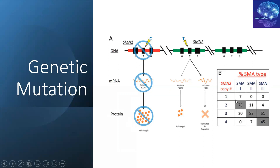If the copy number is one, the patient most commonly will have the SMA1 variant. With two SMN2 copy numbers, most patients will have SMA1, a small number may have SMA2. With three copy numbers, 82% have SMA2, 20% have SMA1, and a good percentage may have SMA3. If a patient has four copy numbers or more, it's going to be SMA3 or maybe SMA4. In summary: the higher the SMN2 copy number, the less severe the disease.